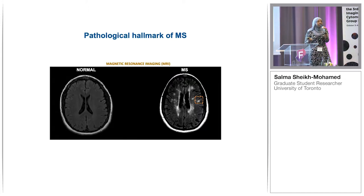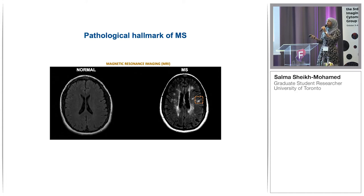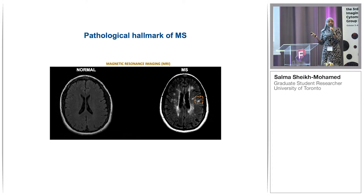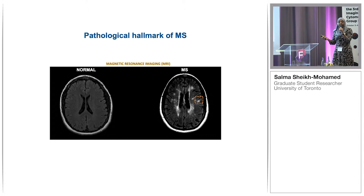When a patient comes to the hospital showing symptoms of MS, one of the first things done to help diagnose them is an MRI. Here you're looking at the MRI of a healthy brain compared to the MRI of someone with MS. You can already see that the brain shows a lot of physical differences. What I want you to focus on are these white spots in the deep white matter tissue — these are the actual lesions, areas where myelin has been stripped away.